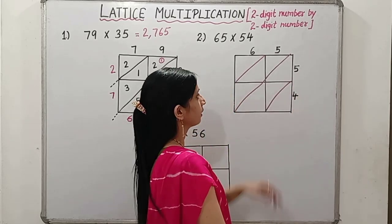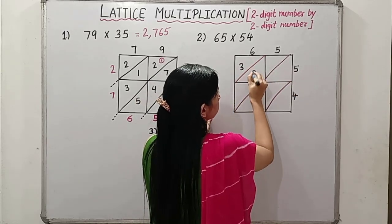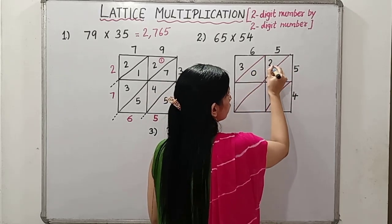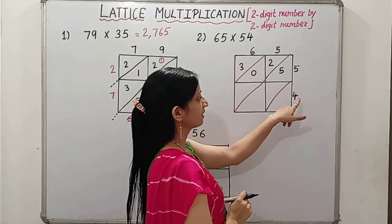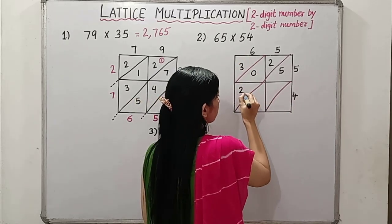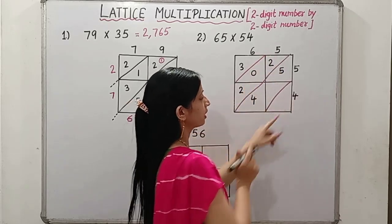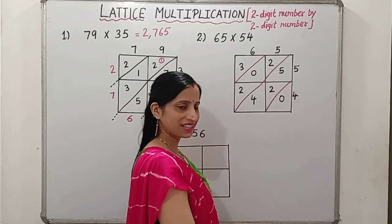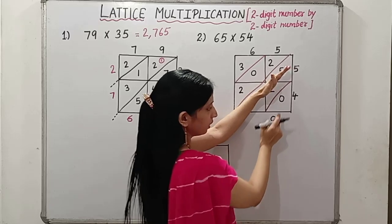Now, multiply 6 by 5. 6 fives are 30. 5 fives are 25. Then 6 fours are 24. 5 fours are 20.